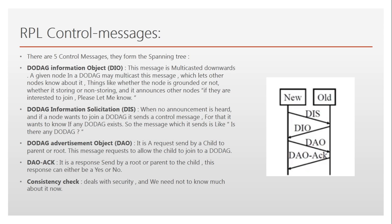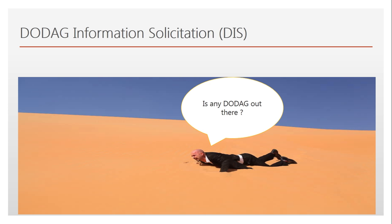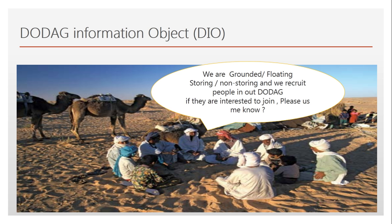If you still didn't understand, don't worry — I will explain it figuratively to make it easier. There is a person on a deserted island — think of this like a node — who sees no trace of human beings anywhere. So what it does is start screaming loudly: is any DODAG out there? This is the DODAG Information Solicitation.